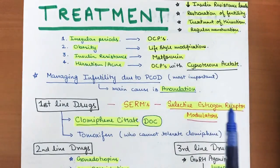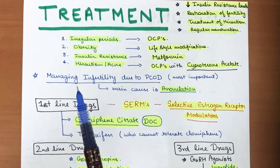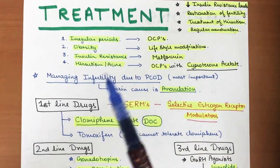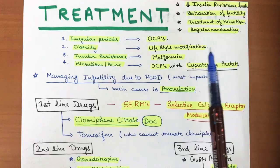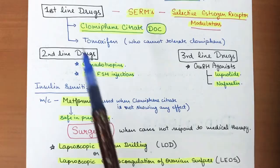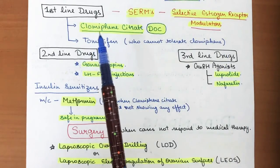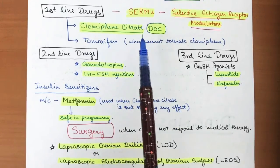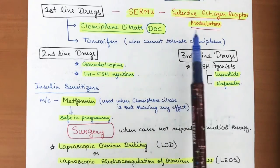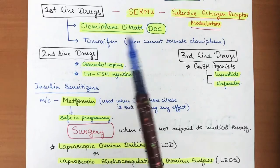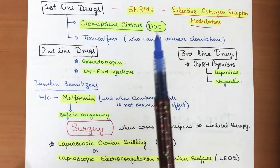Managing infertility due to PCOD is a key treatment goal, as anovulation is the main cause. First-line drugs are selective estrogen receptor modulators (SERMs) — specifically clomiphene citrate, which is the drug of choice for treating infertility in PCOD. Tamoxifen can also be used in females who cannot tolerate clomiphene citrate.